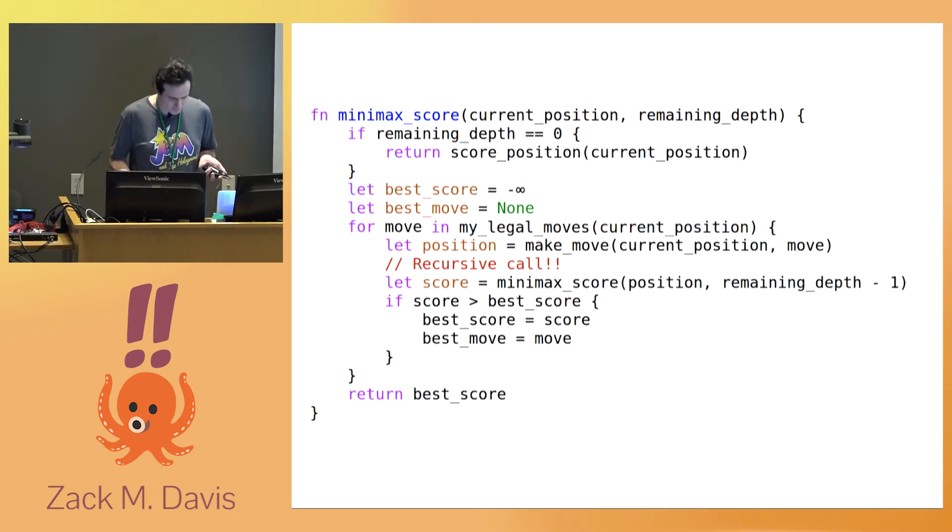Whereas instrumental goals are things that you want to achieve not for their own sake, but because they lead to terminal goals, like washing your hair, getting enough sleep, capturing one of your opponent's pawns. So chess enthusiasts have names for specific board situations that have special significance, because they happen to be advantageous for one of the players.